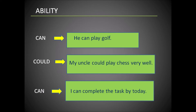Let's look at examples of ability. 'Can' — 'He can play golf.' 'Could' is the past form of 'can' — 'My uncle could play chess very well.' And another example using 'can' — 'I can complete the task by today.' Here all the modal verbs 'can' and 'could' determine the ability of a person or a thing to perform a specific task.